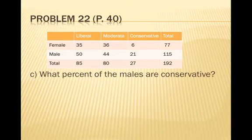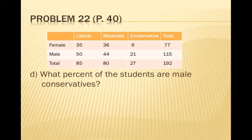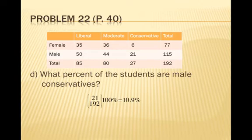What percent of the males are conservative? Now our denominator switches to just the males: 115. Of those, 21 are conservative, so 21 divided by 115 times 100% is 18.3%. What percent of students are male conservatives? Since we want the percent of all students, the denominator goes back to 192. There are 21 male conservatives out of 192 total students, so 21 divided by 192 times 100% is 10.9%.